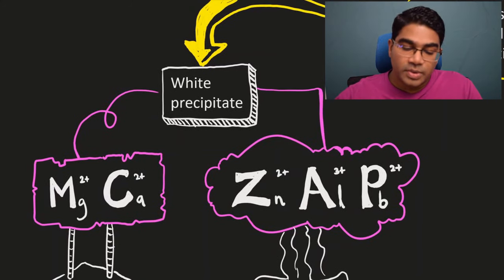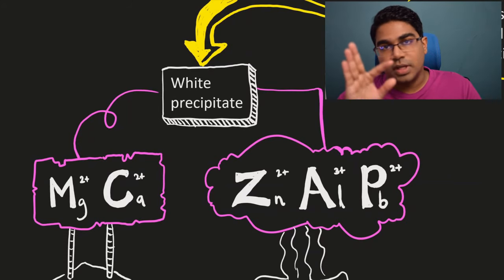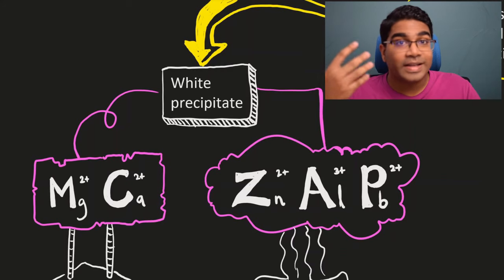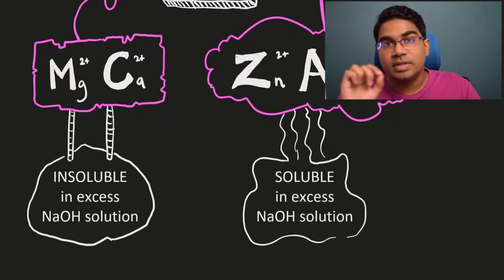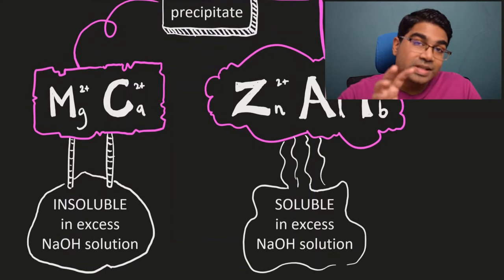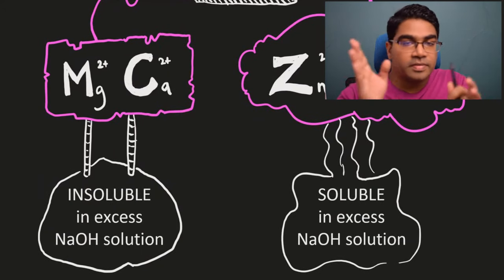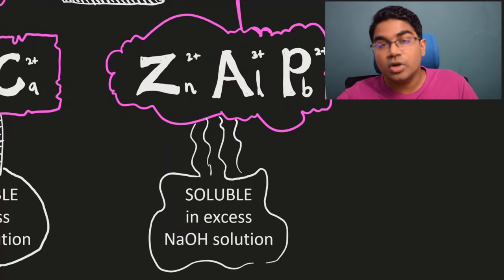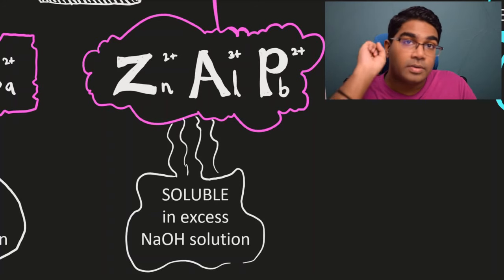Now how to differentiate between them? All five are possible. We can break it down into either two or three by adding sodium hydroxide solution until in excess. When you add sodium hydroxide solution until in excess, you see whether there is an insoluble precipitate or whether the white precipitate has dissolved. If the white precipitate is still insoluble in excess sodium hydroxide solution, then it is either magnesium or calcium. If the white precipitate dissolves in excess sodium hydroxide solution, it is soluble, then it is either zinc, aluminium or lead.